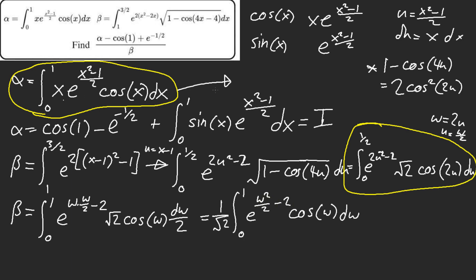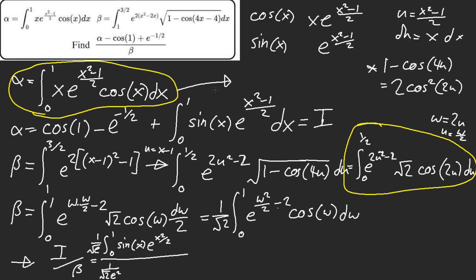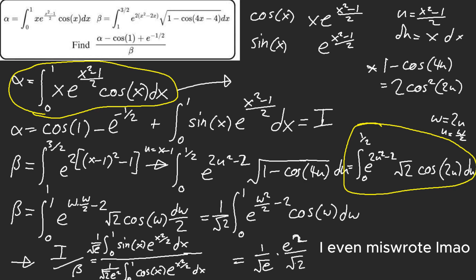That looks exactly like alpha, but alpha has that x — I don't have that here, that's what's throwing me off. This is horrible. I don't see the Canadian trick here. Do these two integrals equal? That's what's striking me — one has an x and this one does not. You can't do integration by parts with this because it's not elementary. Do I just assume they're both equal and say okay, this is just equal to one over root e times e² over root two?